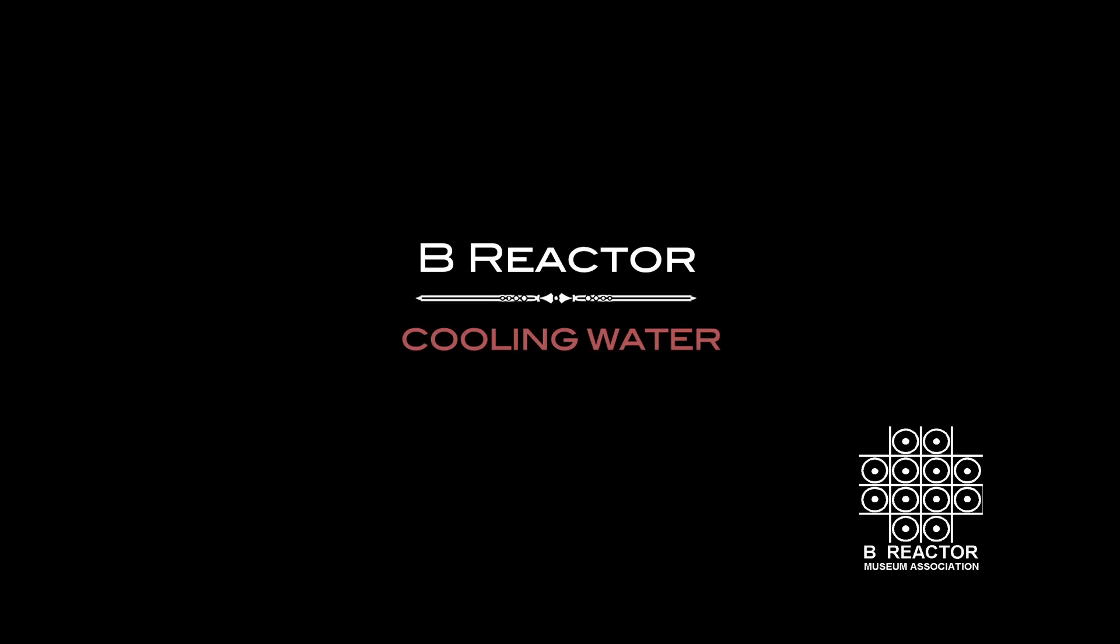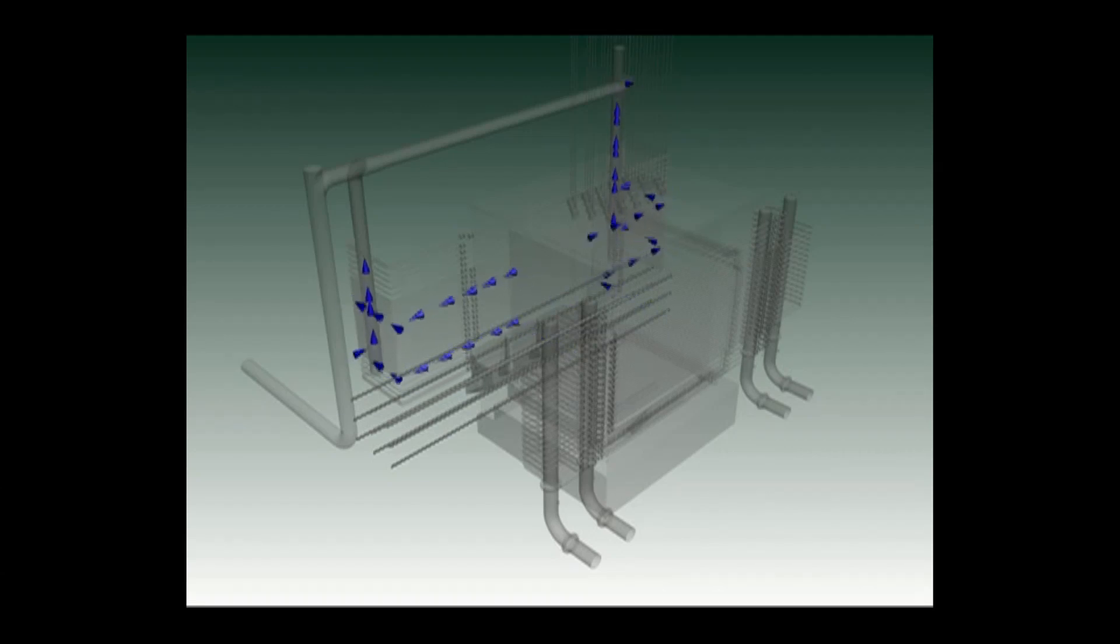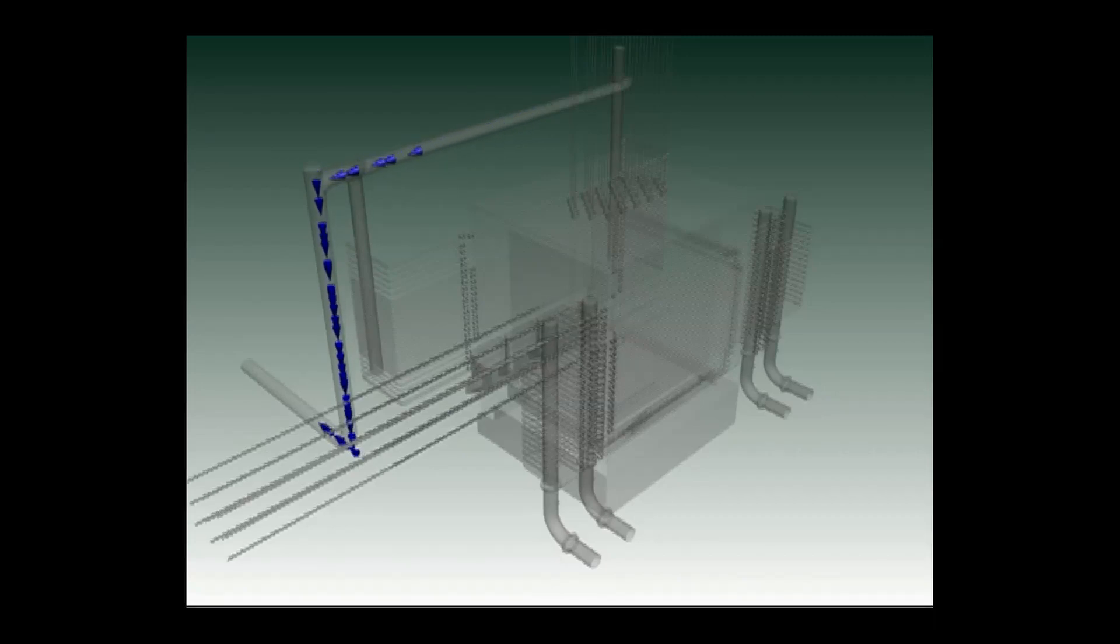Cooling Water. The cooling water for the reactor is piped from the pump house building just outside the reactor building. The 30,000 gallons per minute of treated Columbia River water reaches the reactor through two 20 inch diameter pipes on each side of the front face.